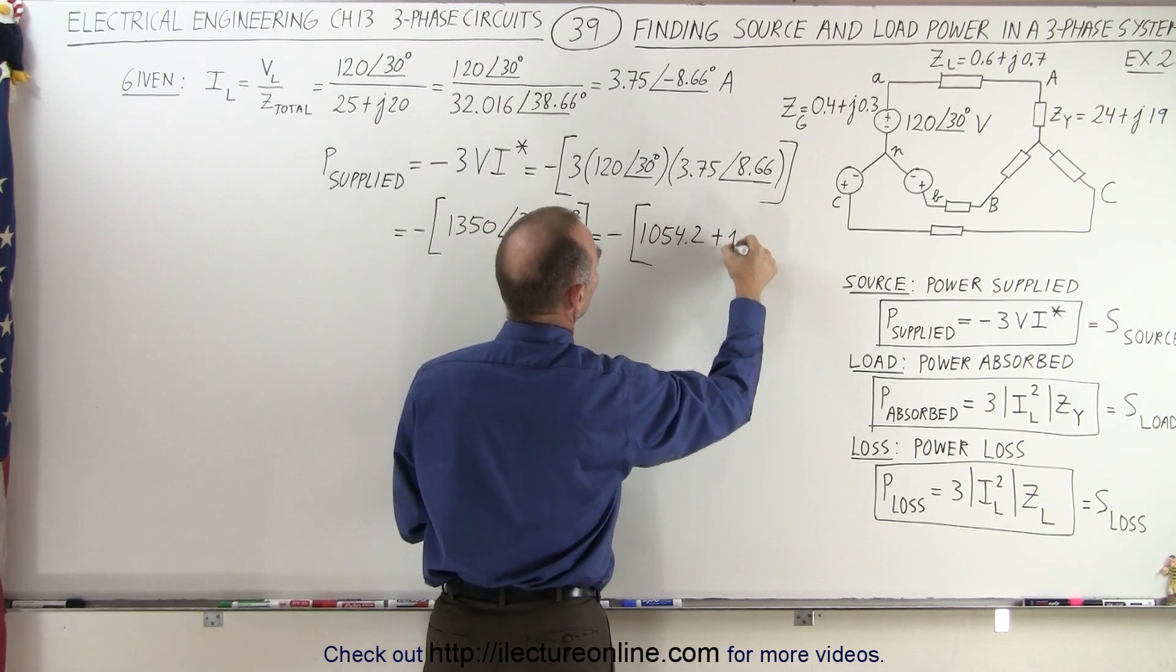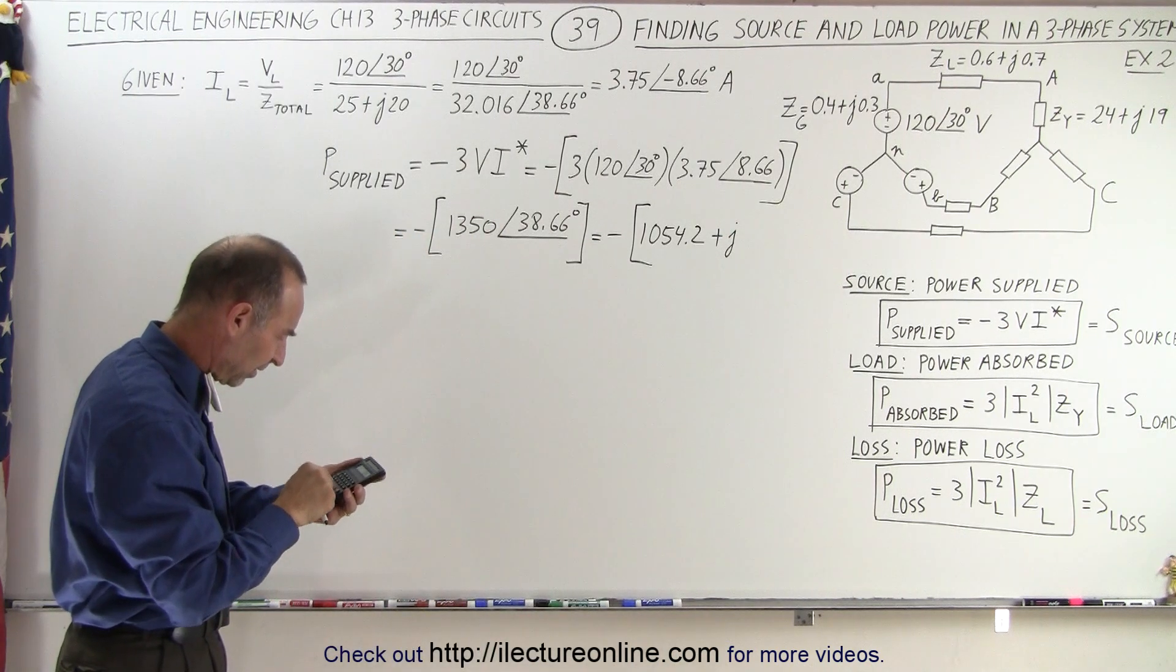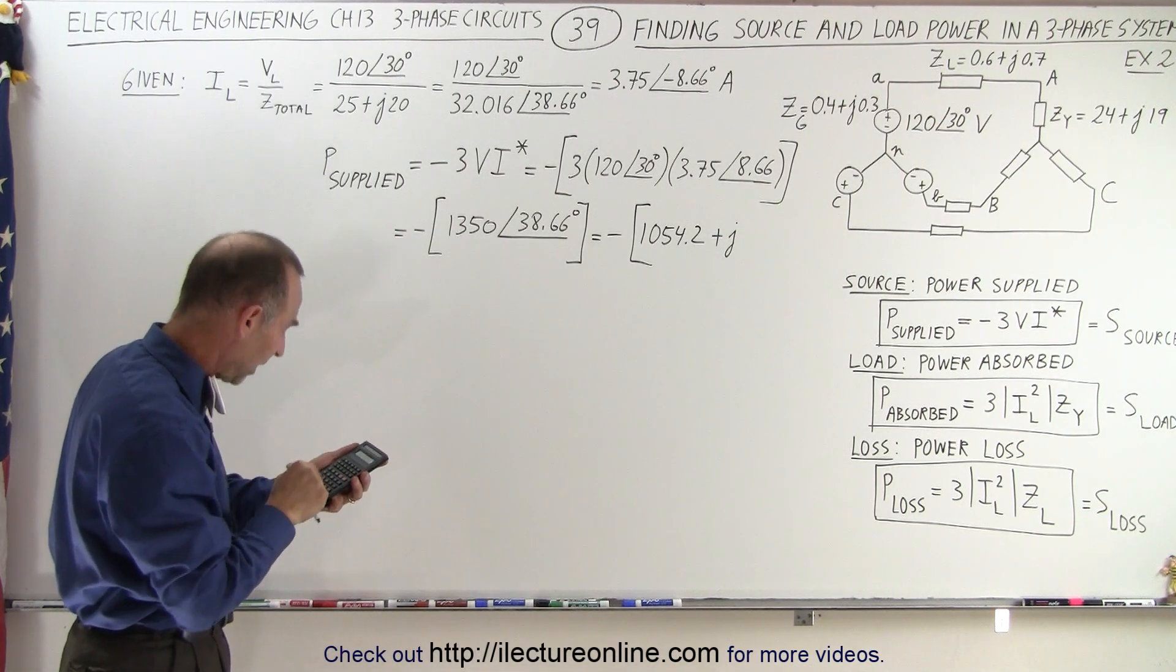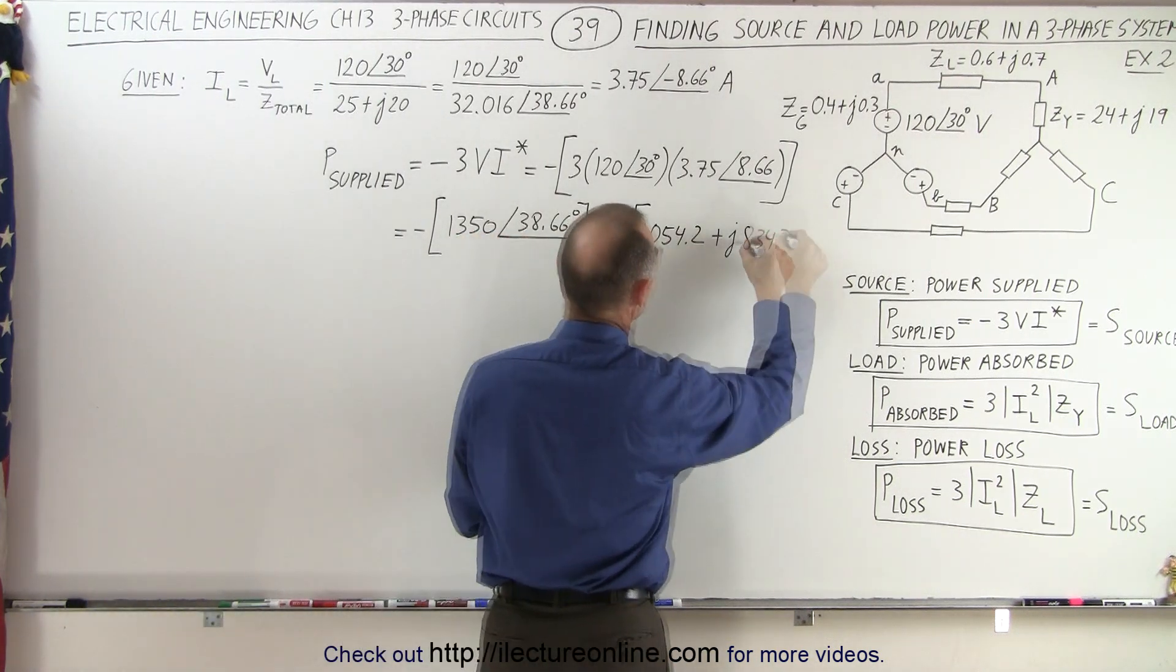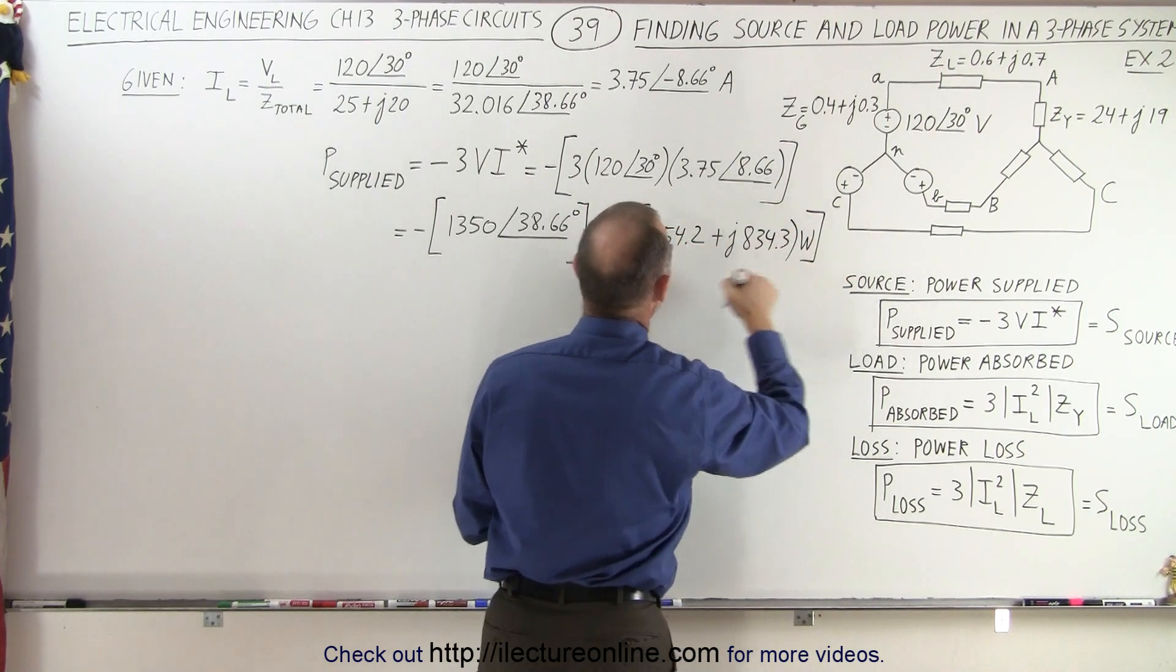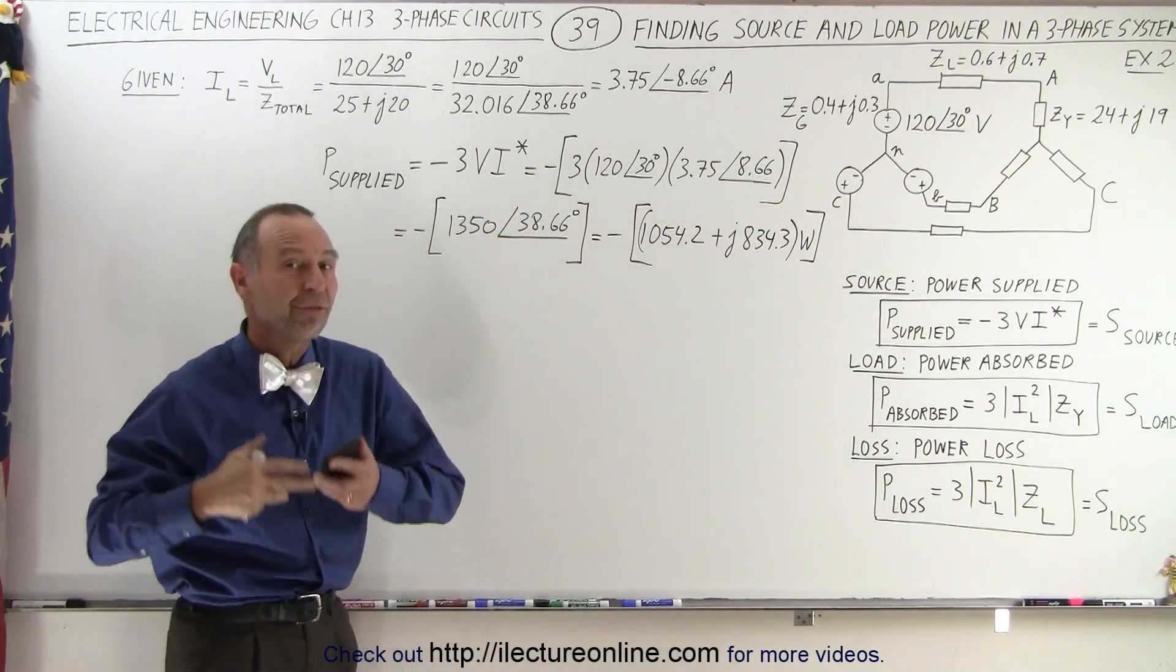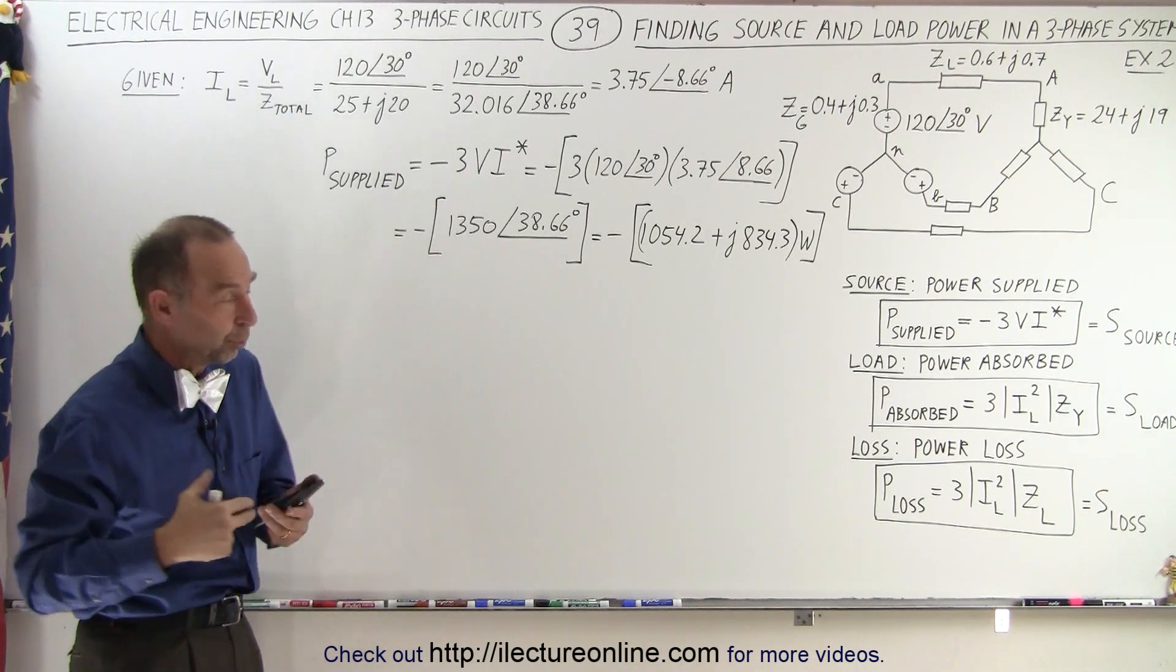And then plus j, the imaginary part of that. 38.66 degrees, multiply times 1350. That gives us 834.3. And of course, that would be in terms of watts. And negative because it's power provided by the source.